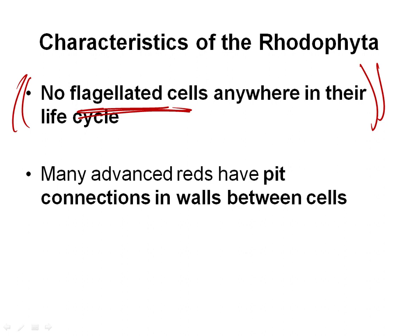The fantastically complex and interesting life cycles we're going to see are probably an adaptation to the fact that we do not have flagellated sperm. In the advanced reds, there are pit connections between the walls. In general, in the most advanced red algae, there are holes in the cell wall where there's cytoplasmic continuity between the cells.